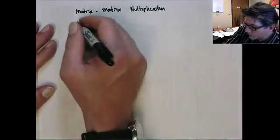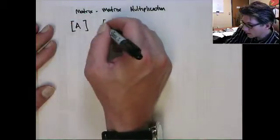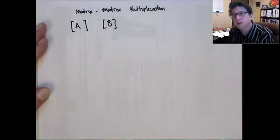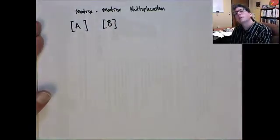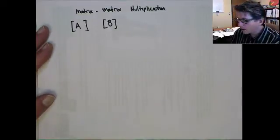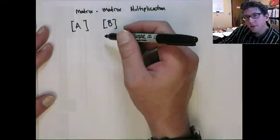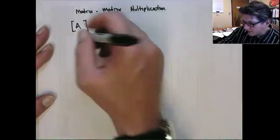Okay? So where we have two matrices, A and B, and we want to look at multiplying them together. Now, in this situation, you don't go element by element, okay?